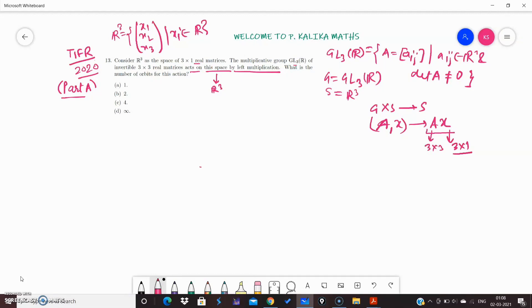Now what they are asking is: what is the number of orbits for this action? First, recall the definition of an orbit. For any X belonging to S, we define orbit as AX such that A belongs to G, where A runs over all the elements of group GL₃(R).